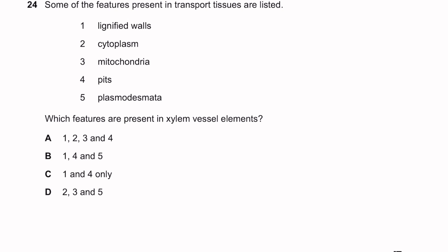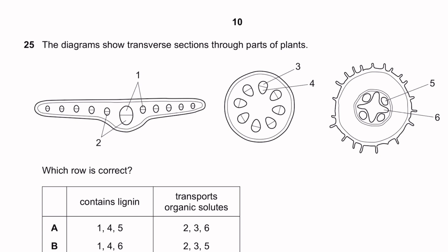Question twenty-four: which features are present in xylem vessel elements? Lignified cell walls — yes. No cytoplasm and no mitochondria — yes, because xylem vessels are dead cells. Pits — yes. No plasmodesmata — correct. The answer includes lignified walls and pits (features 1 and 4). Xylem vessels are dead cells with only the lignified cell wall remaining and pits for water movement, no living components. Question twenty-five: in a diagram of plant tissue cross-sections, xylem contains lignin (features 1, 4, 6) and phloem transports organic solutes (features 2, 3, 5). Phloem is always to the outside.